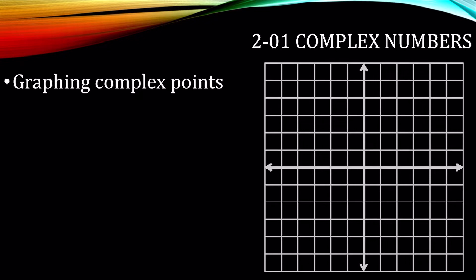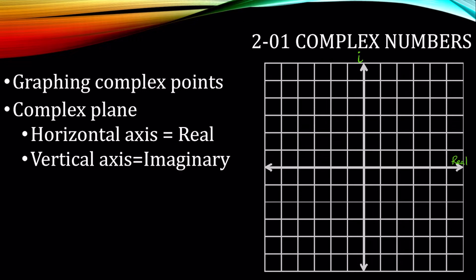We can graph complex numbers on what's known as the complex plane. The horizontal axis is known as the real axis, and the vertical axis is the imaginary axis. But again, don't think of it as existing and not existing or real and made up. They're just two different types. The horizontal is real, the vertical is imaginary.